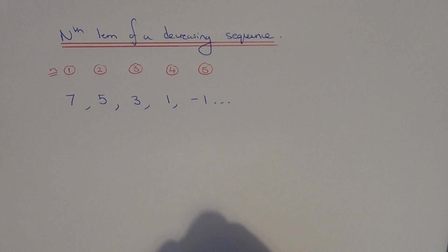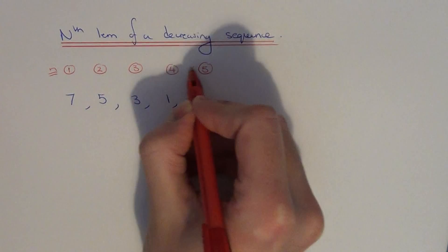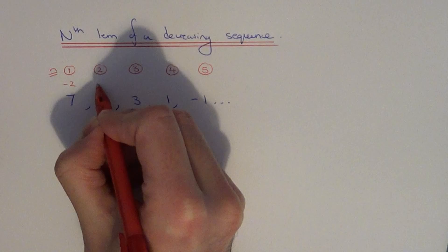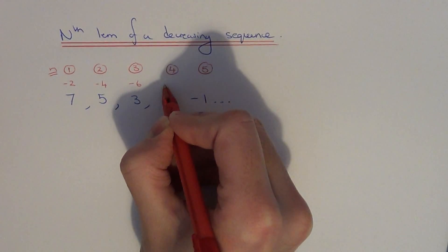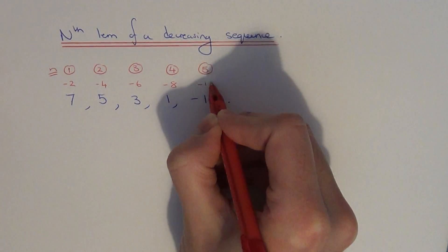So this tells us it has something to do with the minus 2 times tables. So I'm going to multiply each of these position numbers by minus 2. 1 times minus 2 is minus 2, 2 times minus 2 is minus 4, 3 times minus 2 is minus 6, 4 times minus 2 is minus 8, 5 times minus 2 is minus 10.